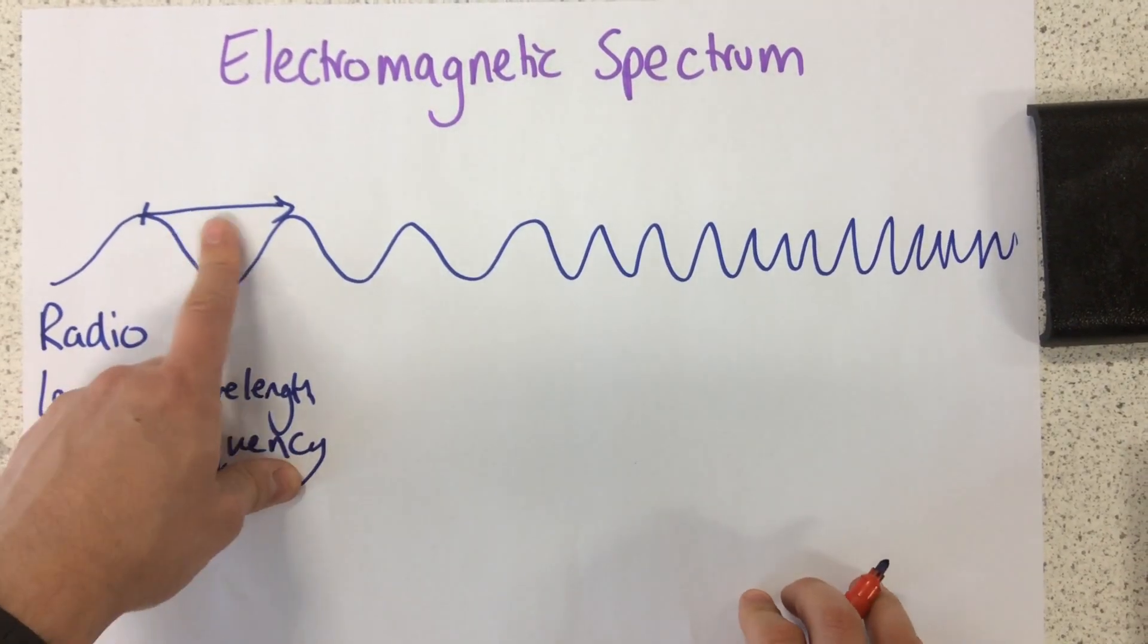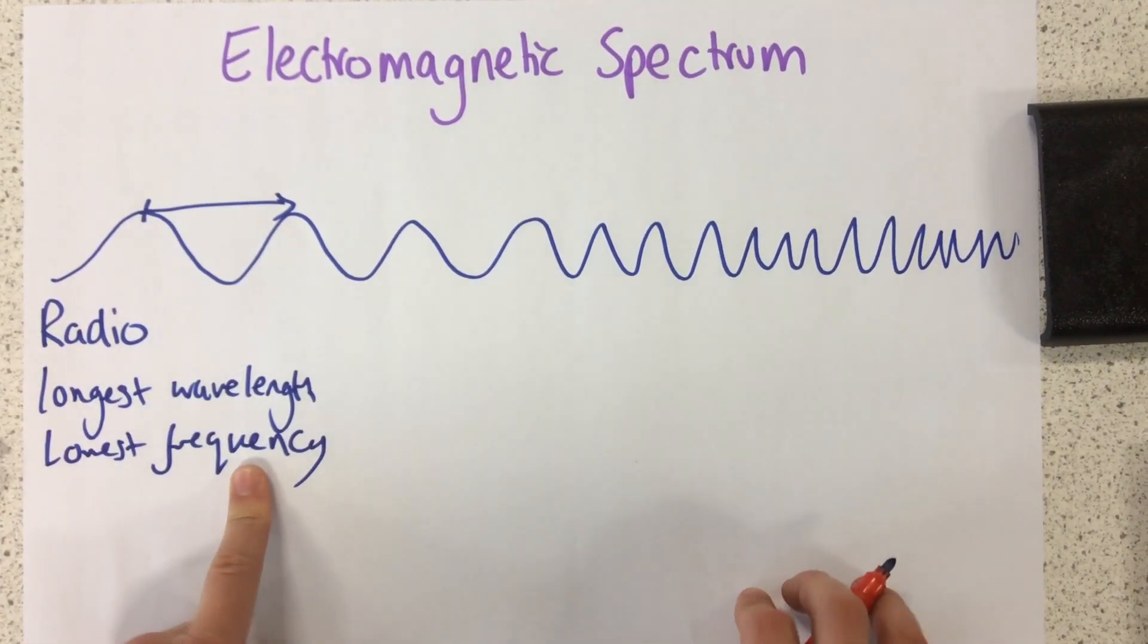And it also has the lowest frequency. So, frequency is how many waves pass the point in one second. And it's measured in hertz.